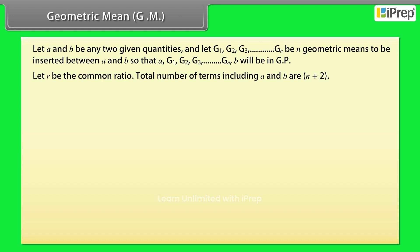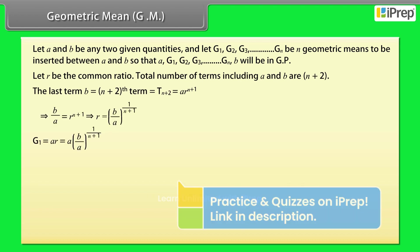Let r be the common ratio. Total number of terms including a and b are n plus 2. The last term b is equal to a into r raised to power n plus 1. G₁ is equal to a into r is equal to a into (b by a) raised to power 1 by n plus 1.